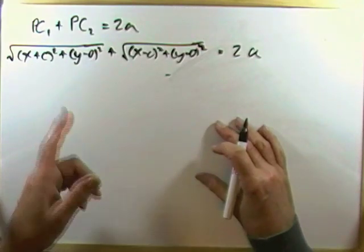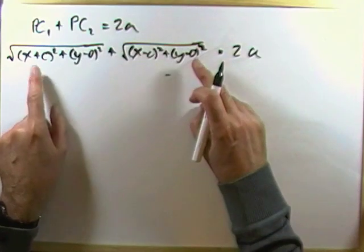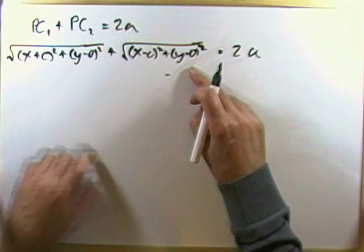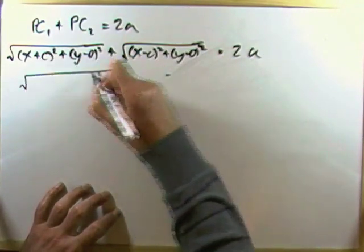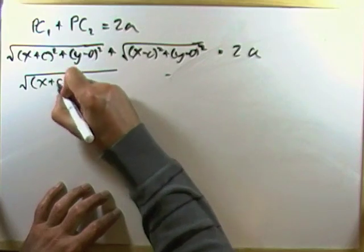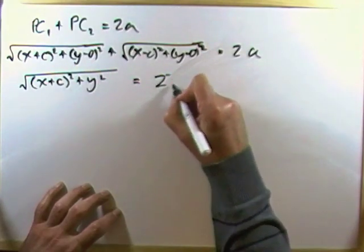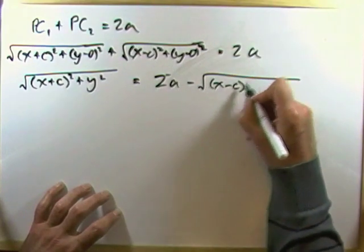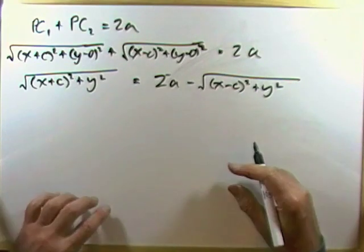Right, how do you deal with that equation with square roots in it? Well, you have to square both sides. I don't want to square them quite yet, because this will produce a nasty twice the product. I think I'd rather move that over here out of the way. So, I'll leave this one away as x plus c squared, and that's just y squared, equals 2a minus the square root of x minus c squared plus y squared. And now try squaring it.